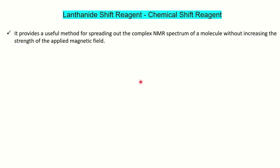First we will discuss why we need the lanthanide shift reagent, or what is the application of it. This reagent is very useful to spread out the complex NMR spectrum of a molecule. If you have a very complex spectrum where all the peaks are coupled and you are not able to distinguish them, then you use the lanthanide shift reagent. It spreads out the spectrum into a wide range without increasing the strength of the applied magnetic field — for example, if you are working on a 60 MHz NMR and don't have access to 100 or 250 MHz, you can use this reagent instead.